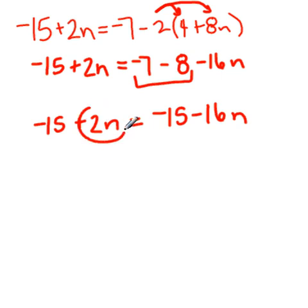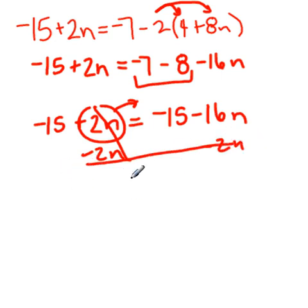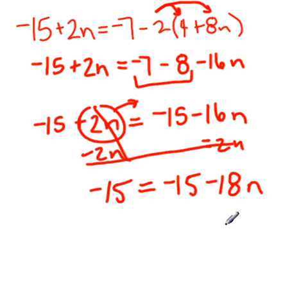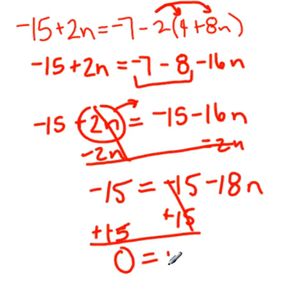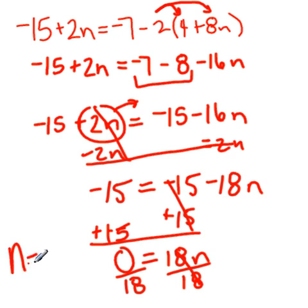Me? I'm going to move the 2n across. How do we do that? Remember, we subtract. That way it cancels. So, I'm left with negative 15 equals negative 15. That was minus 2. Negative 18n. To get n by itself, I'm going to add 15. Cancels. Well, technically it cancels there too. We're left with 0 equals negative 18n. If I divide by 18, 0 divided by any number, n will equal 0.